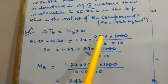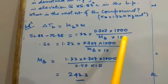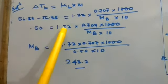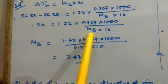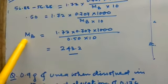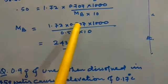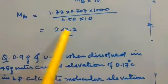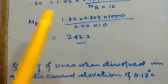Molality is equal to weight divided by molecular weight into 1000 into weight of the solvent. Now, 0.50 = 1.72 × 0.707 × 1000 / (Mb × 10). Now, when we calculate, the Mb will be equal to 243.2 kg.